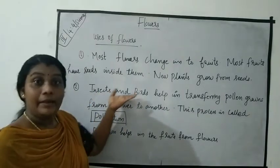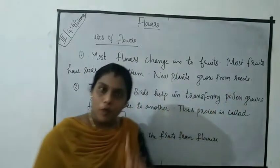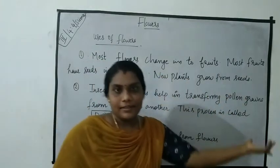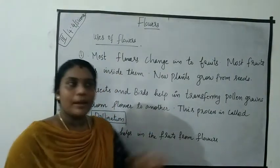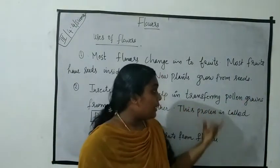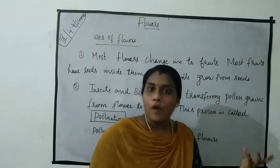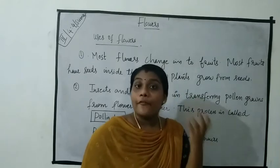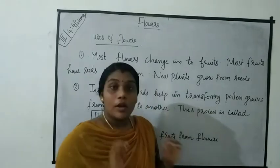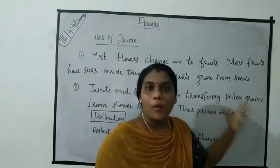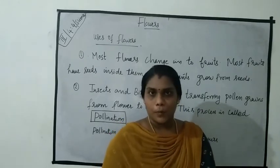Insects and birds help in transferring pollen grains from one flower to another — this process is called pollination. Pollen means a substance that helps plants to form seeds. Flowering plants make pollens. A grain of pollen is so tiny that it is best viewed by microscope.